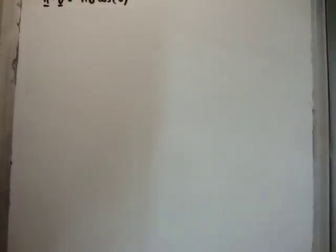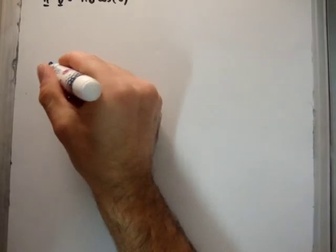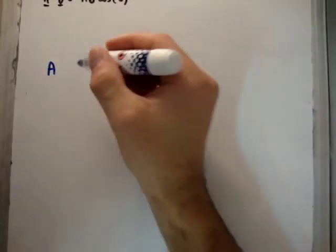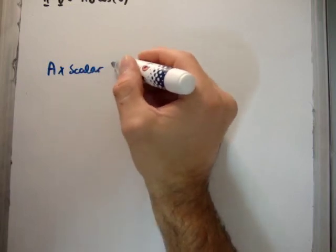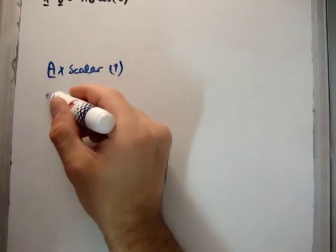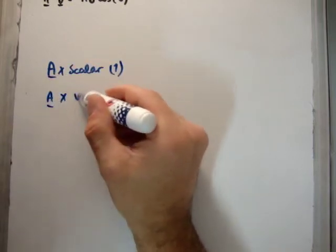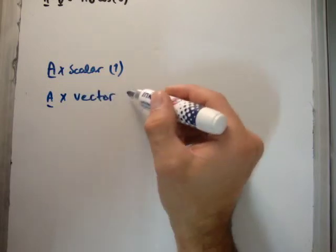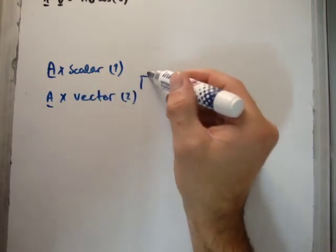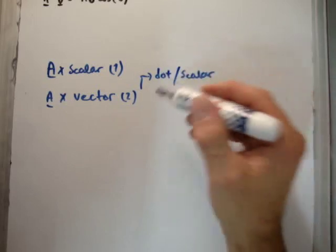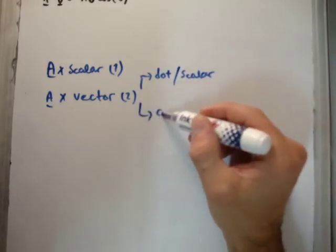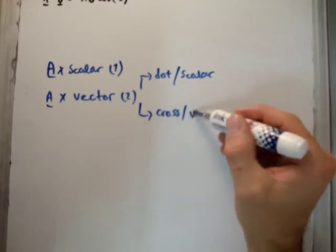Just to point out, if you have a vector, let's say the vector capital A, there are three things you can do to it. You can multiply it by a scalar, and there's only one way you can multiply it by a scalar. Or you can multiply it by a vector, and there are two ways you can multiply it by a vector. You can take the dot or the scalar product, or you can take the cross or vector product.